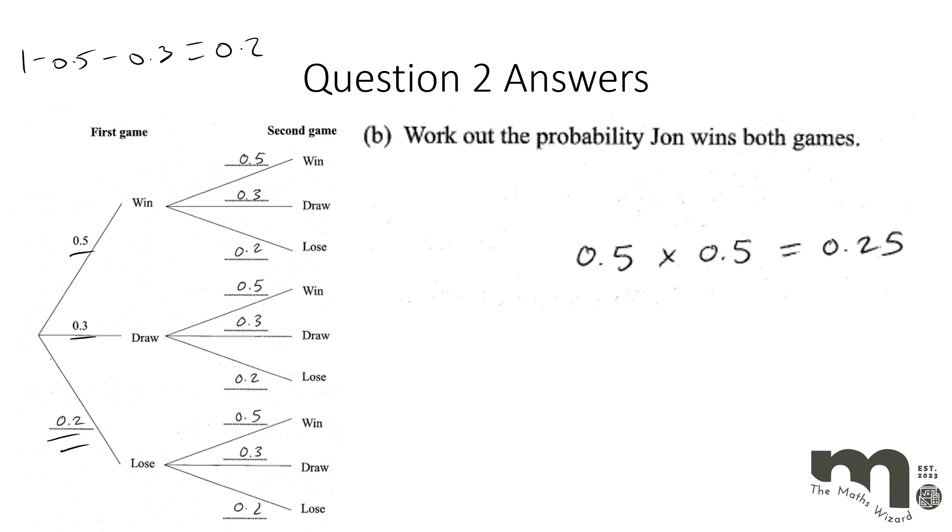Now these probabilities will be the same all the way down these branches. So the probabilities do not change if he wins the first game. If he draws it or if he loses it. So those three probabilities stay the same all the way down. So we've got one set of three there. Another set of three if he draws there. And then the other set of three if he loses here.